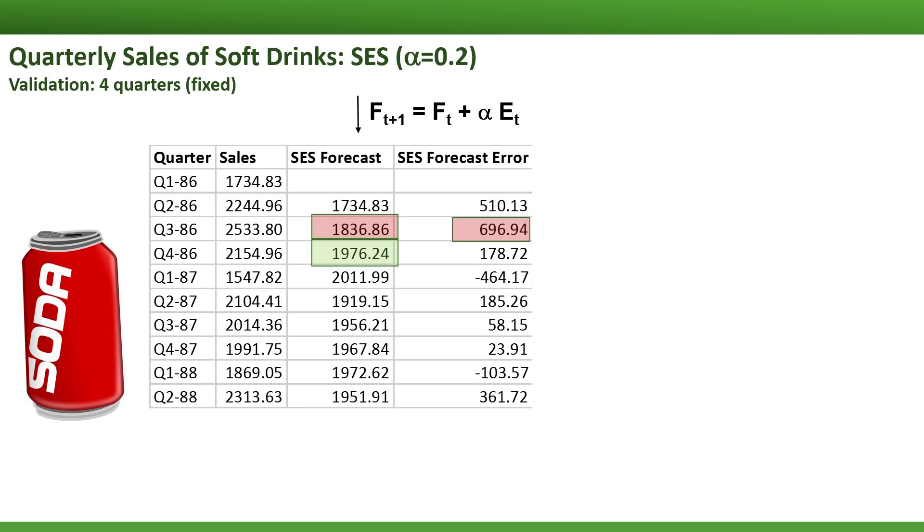The same process is repeated for the next quarter. We take our previous forecast and adjust it by adding alpha times the error. You'll notice that some of the forecast errors are negative, which indicates an over-forecast. In such cases, the next simple exponential smoothing forecast will be adjusted down. These computations can be done manually, but of course, in practice, we'd use software to compute them.